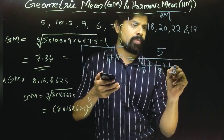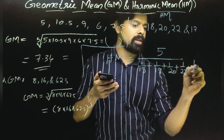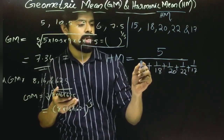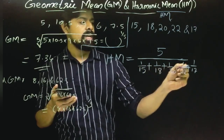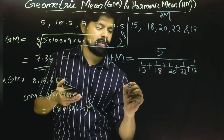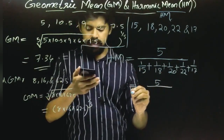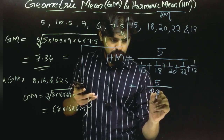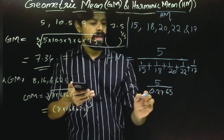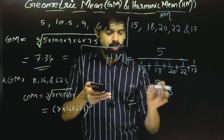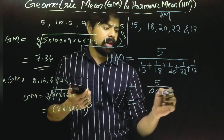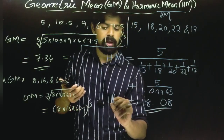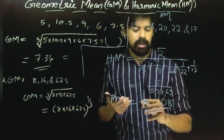The harmonic mean formula uses reciprocals: 1/15 + 1/18 + ... for all values. We then calculate 5 divided by the sum of reciprocals, which equals 5 divided by 0.2765, giving a harmonic mean of approximately 18.08 km/h.